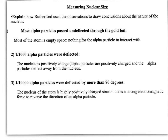The fact that one in 10,000 were deflected by more than 90 degrees told you the nucleus was highly positively charged — it had a very strong electromagnetic field around it, strong enough to reverse the direction of an alpha particle. So these are the conclusions drawn, and the last part looks at what calculations can be done based on this.